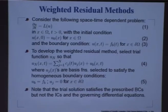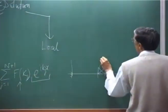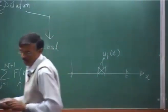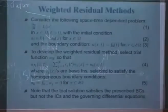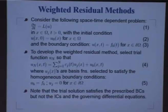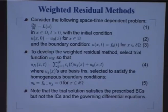So this two together — u_j of x — I prescribe that space dependence there. In addition, in equation 4 the last part u_b of x is put in there; that actually helps you in satisfying the boundary condition. So what you are trying to do is: one part of the trial solution is geared towards satisfying the differential equation, and another part is geared towards satisfying the boundary condition.